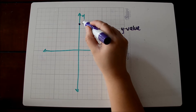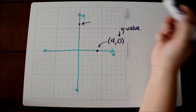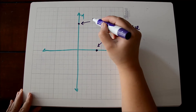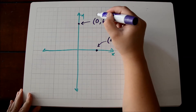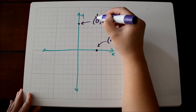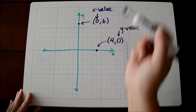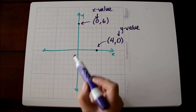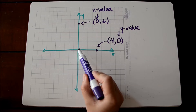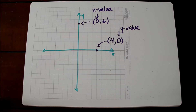Looking at this y-intercept, it has certain coordinates. What we know of all y-intercepts is that they all have an x-value of 0, because we won't go left or right, but we will go up or down a certain amount. And so that's a quick review about x and y-intercepts.